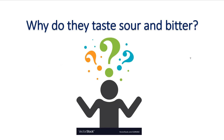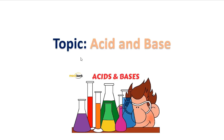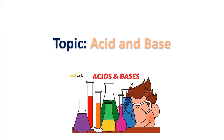This brings us to our topic: acids and bases. The substances that taste sour are because they contain acids, and similarly the substances that taste bitter are because they contain bases. In order to understand this better, let me give you a list of some edible items and we will differentiate them by how they taste.